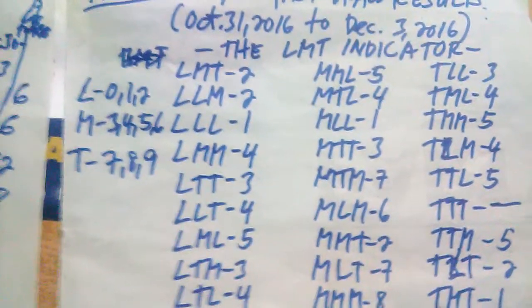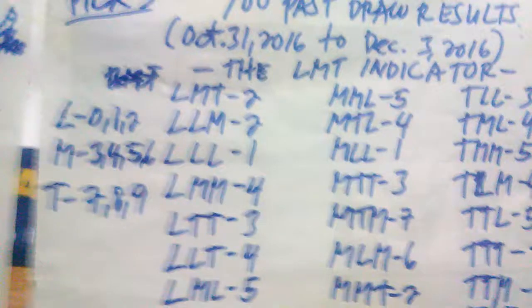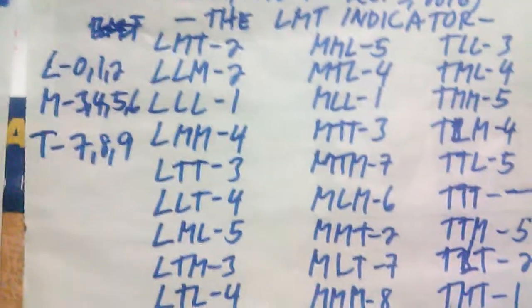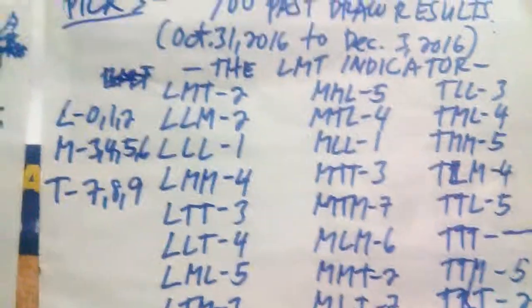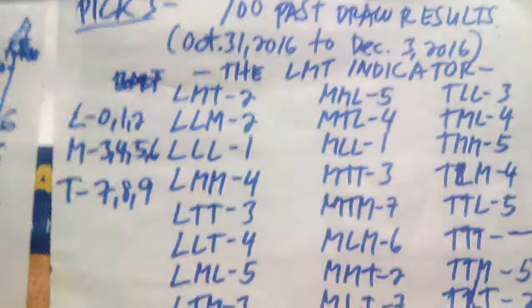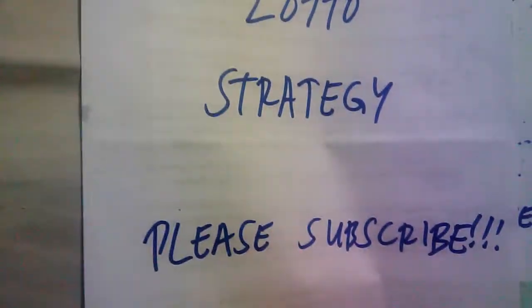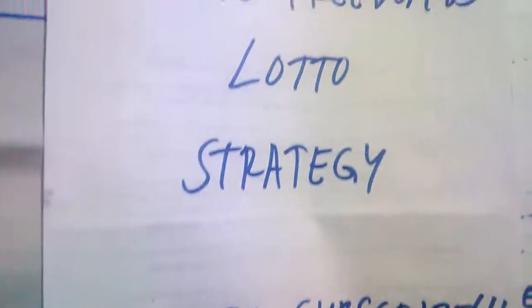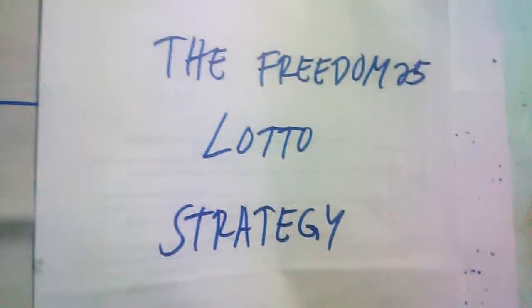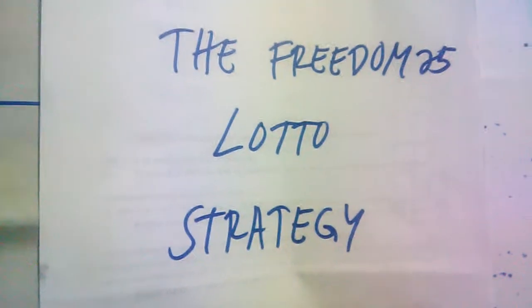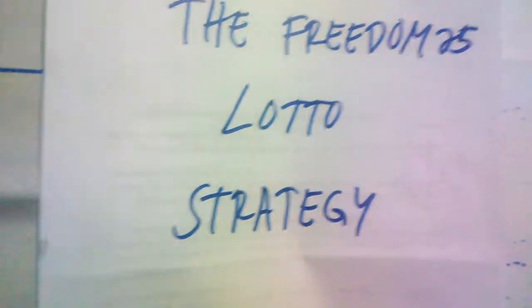The LMT indicator is very important because it will give us straight winnings in Pick 3. It is essential for you to understand exactly the concept of the Freedom 25 Lotto strategy. Please do subscribe to my YouTube account to understand further the concept of the Freedom 25 Lotto strategy. Thank you and good day.